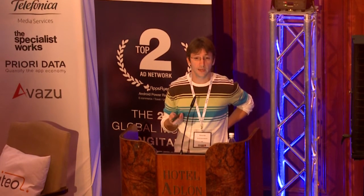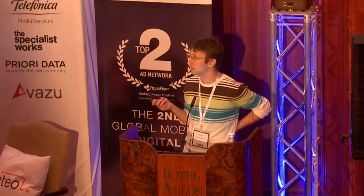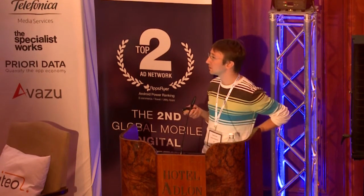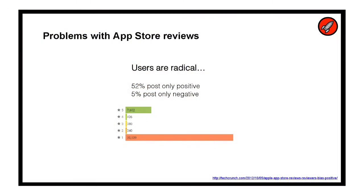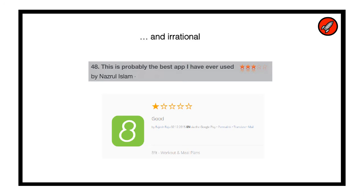Before talking about how to get more reviews and better reviews, I wanted to underline a few problems we have with reviews — mostly on the iOS store. The first thing is that users are very radical: they usually leave either 5 stars or 1 star, with very few in the middle. The second thing is not only are they radical, but they're irrational. Here you've got a review from yesterday from an app — a guy saying 'oh yeah, this app is good' — 1 star.